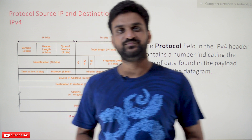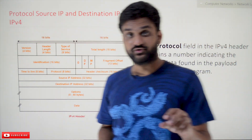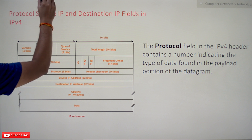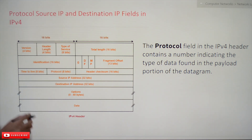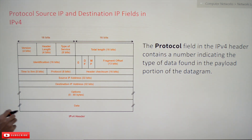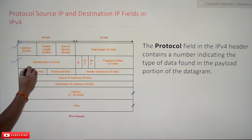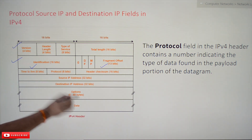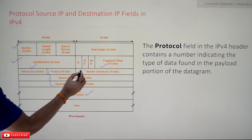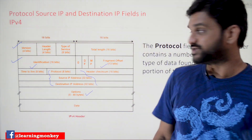Hi, welcome to Learning Monkey. I am Vikram. In this class we'll try to understand the protocol, source IP, and destination IP fields in the IPv4 header. Most of the IPv4 fields have already been discussed in our previous videos, so please watch those first. We are left with these three fields and the options field. In this class we'll cover the three fields, and in the next class we'll cover the options field.